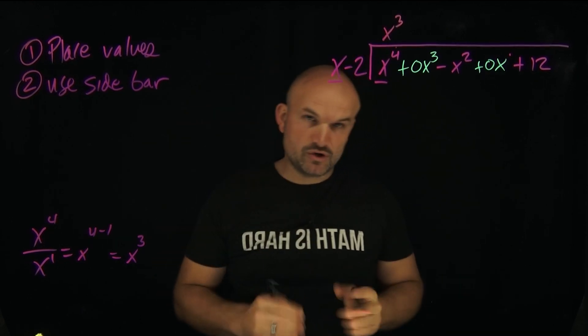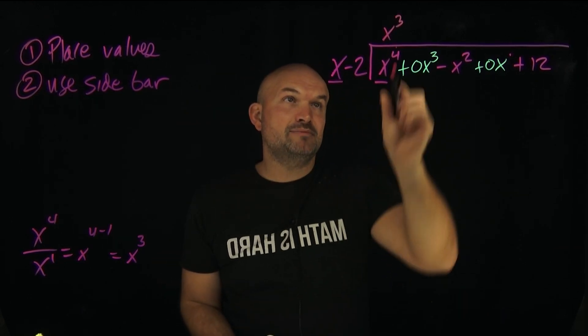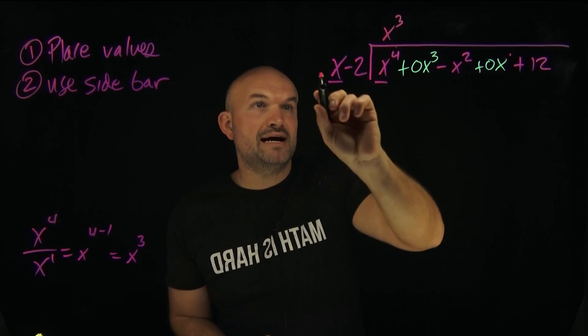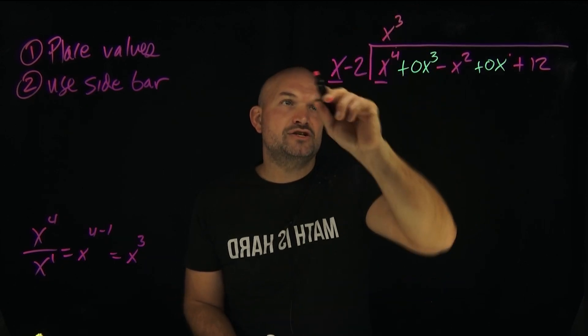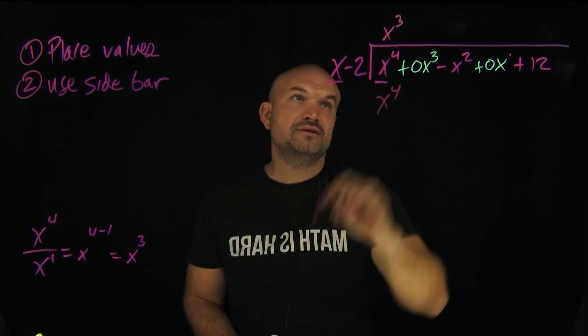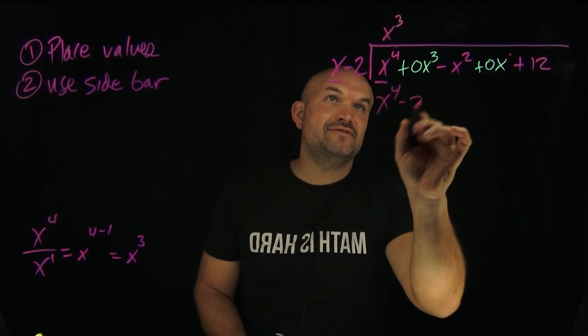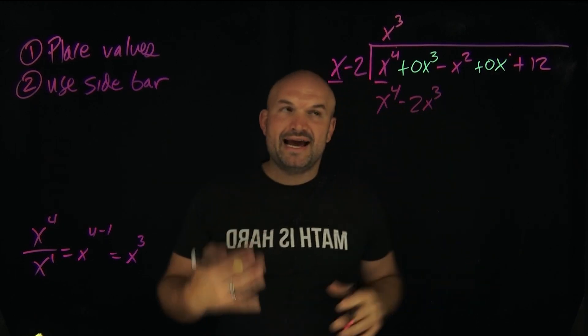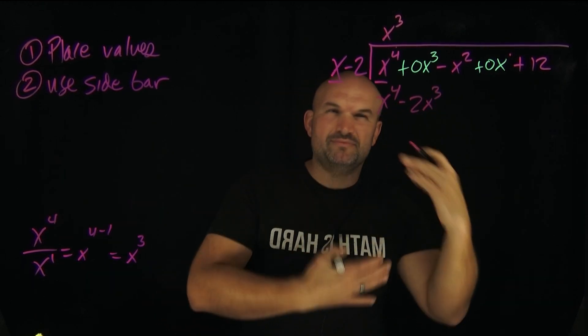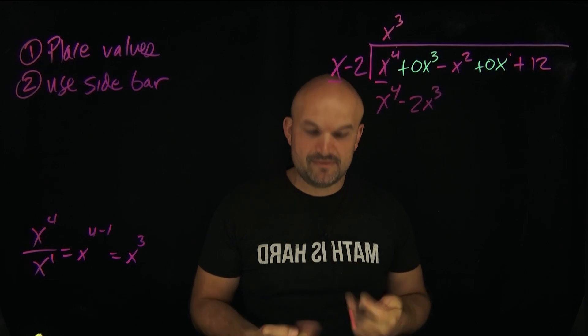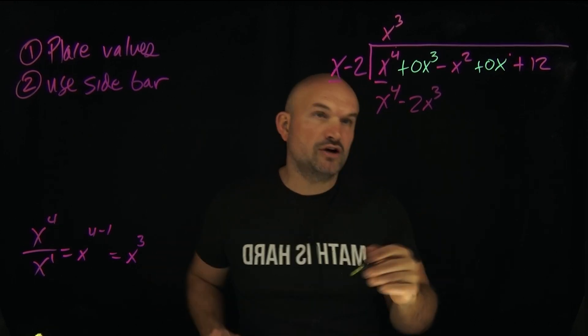Now that is the first term of your quotient or your answer. And now what we're going to simply do is multiply this x³ times both terms of your divisor. x³ times x is going to be x⁴. x³ times -2 is going to be -2x³.